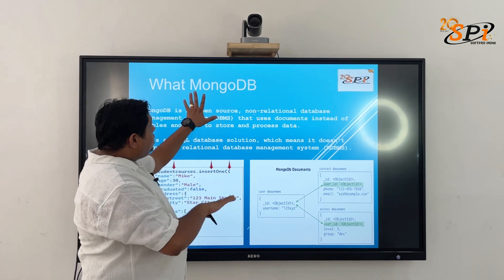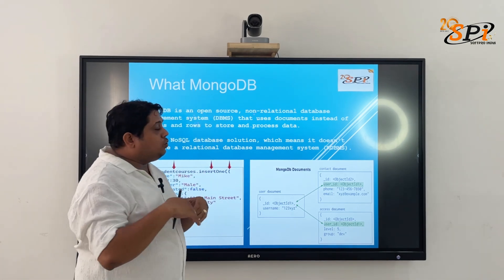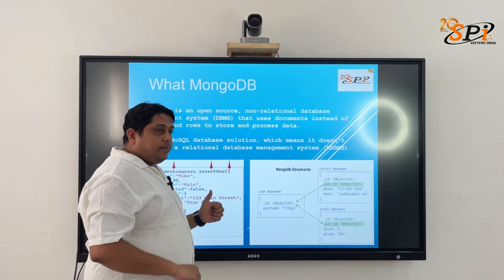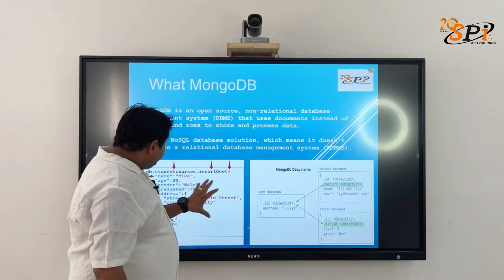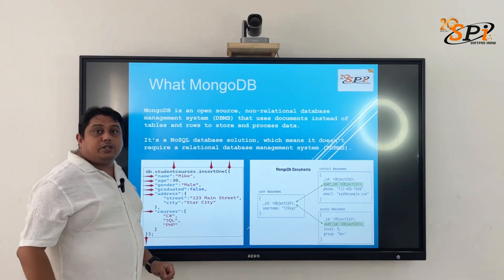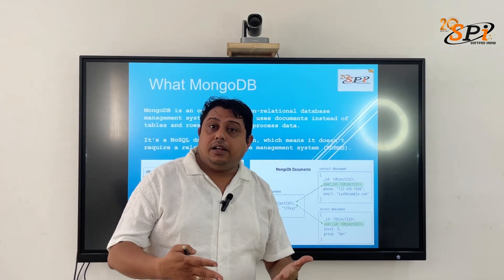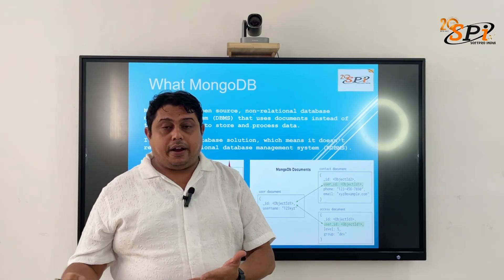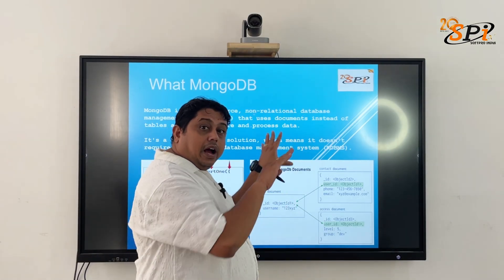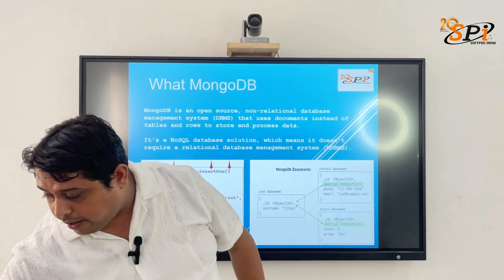Mongoose is the ODM used with MongoDB in the MERN stack for database connectivity. And since MongoDB represents data in JSON format — and JSON is a JavaScript object concept — MongoDB is also working within the JavaScript ecosystem, consistent with the rest of the MERN stack.